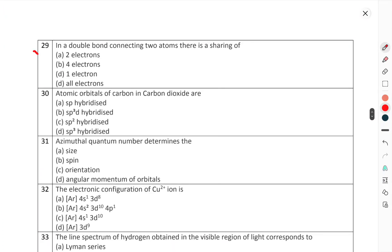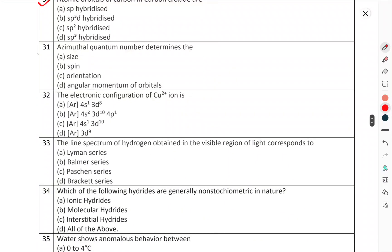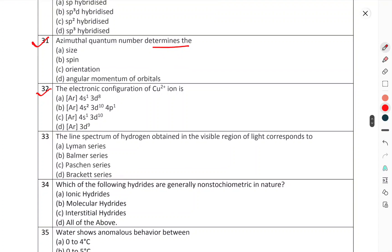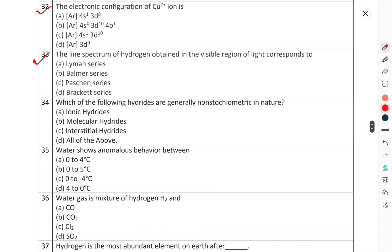Question number 29: In a double bond connecting two atoms, there is a sharing of. Question number 30: Atomic orbitals of carbon in carbon dioxide are. Question number 31: Azimuthal quantum number determines. Question number 32: The electron configuration of Cu2+ ion is.